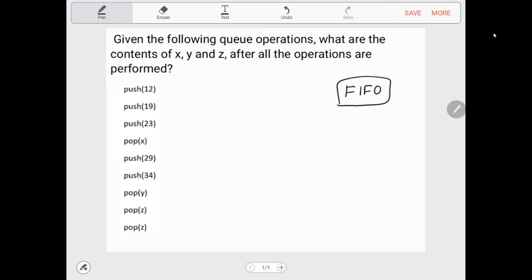Let's go ahead and do this. Let's say this is the queue. We push 12, we push 19, we push 23, and then we pop x. Since queue is first in first out, the first one in was 12.